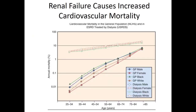It's not surprising that renal failure causes increased cardiovascular mortality. A 35-year-old with end-stage renal failure has a risk of death from cardiovascular disease almost 10 times higher than someone the same age in the general population with normal functioning kidneys. These are very sick patients at baseline.